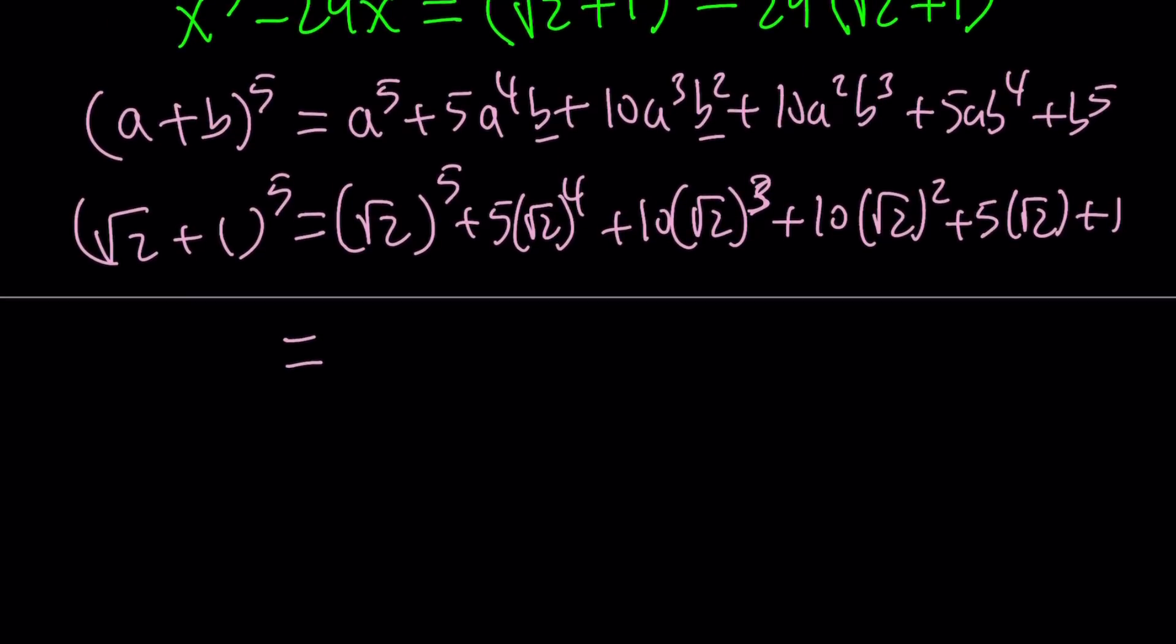So now, how do you raise square root of 2 to the 5th power? You can square, square, and then multiply by root 2. That is going to give you 4√2. This is going to be 20. This is 20√2, this is 20, this is 5√2, and this is 1.